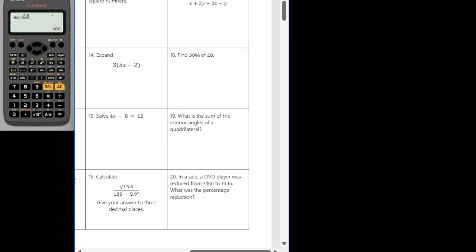OK, question 13. Write down the first five square numbers. OK, the first five square numbers are going to be 1 squared, which would be 1. 2 squared, which would be 4. 3 squared, which would be 9. 4 squared is 16. And 5 squared is 25.